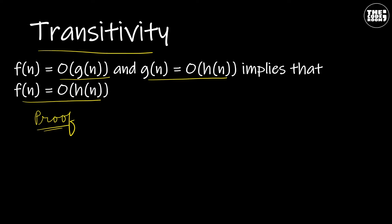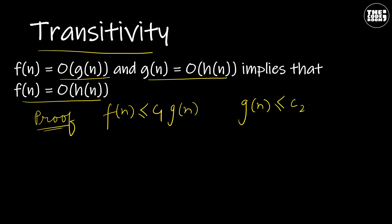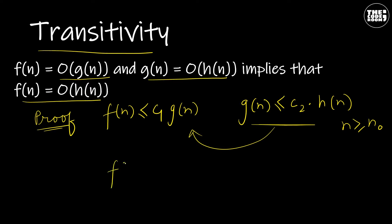By the definition of Big O notation, we have f(n) should be less than or equal to c1·g(n), and g(n) should be less than or equal to c2·h(n) for some values of n greater than or equal to n₀. From this, we can say that f(n) is less than or equal to c1·c2·h(n).